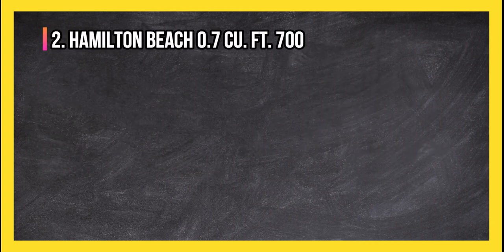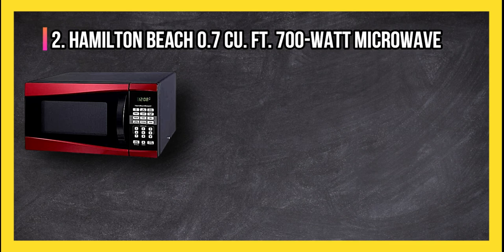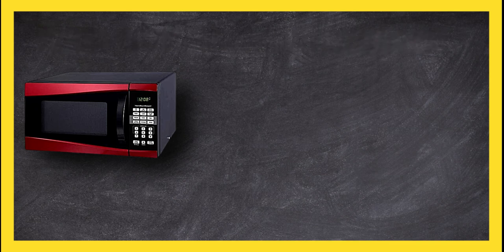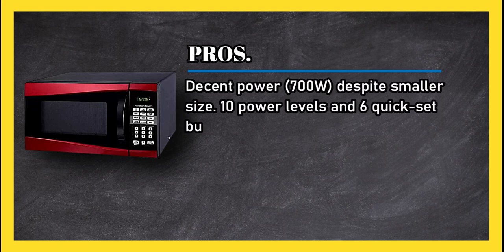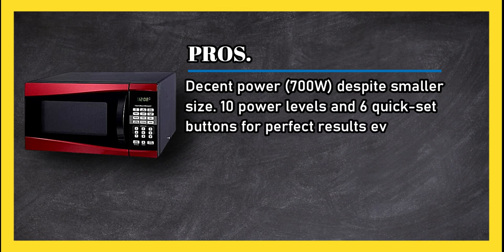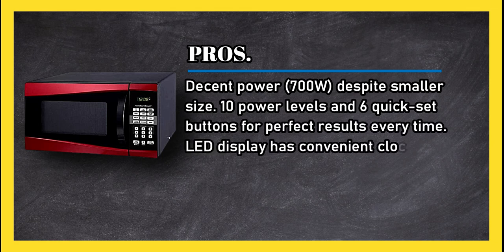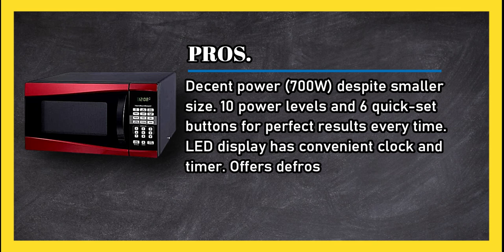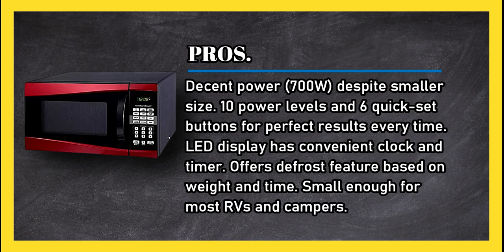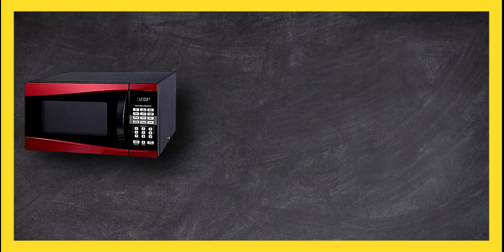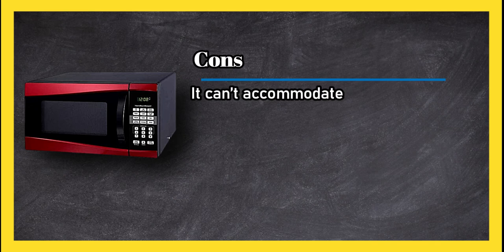At number 2, Hamilton Beach 0.7 cubic feet 700 watt microwave. Pros: Decent power (700 watts) despite smaller size. 10 power levels and 6 quick set buttons for perfect results every time. LED display has convenient clock and timer. Offers defrost feature based on weight and time. Small enough for most RVs and campers.